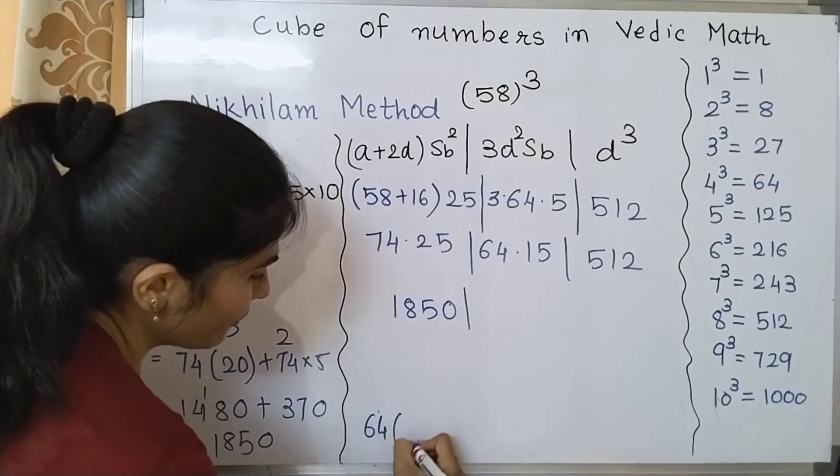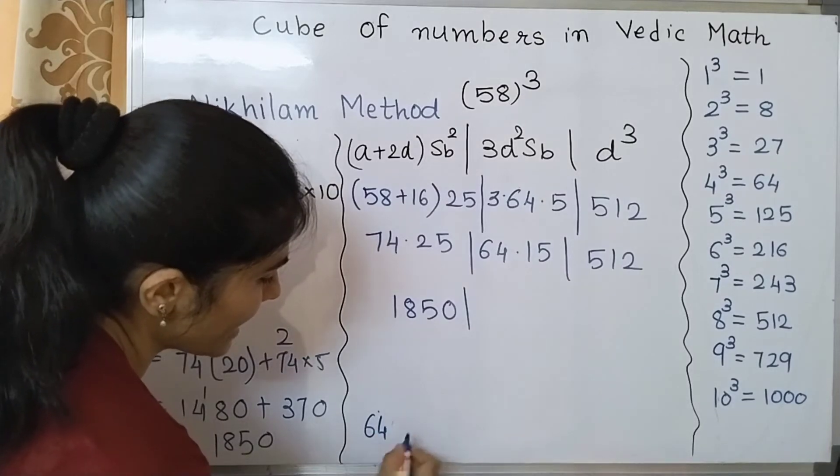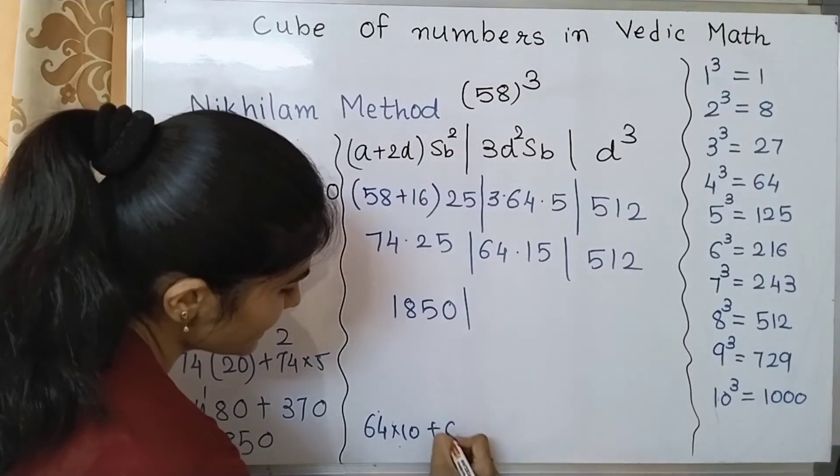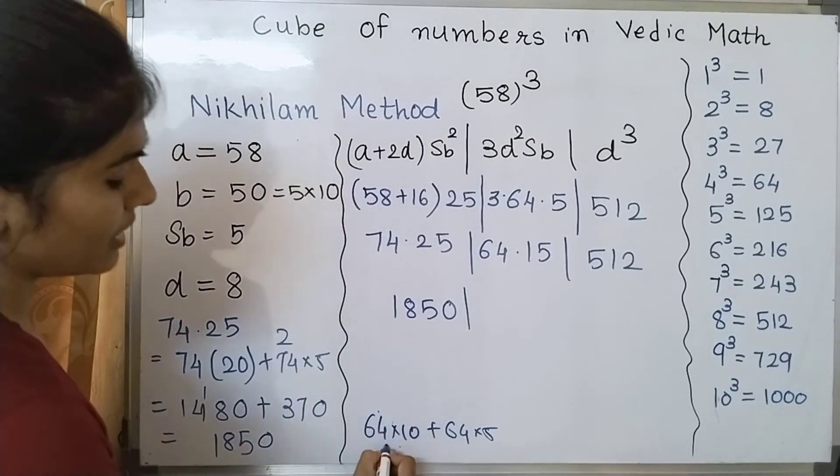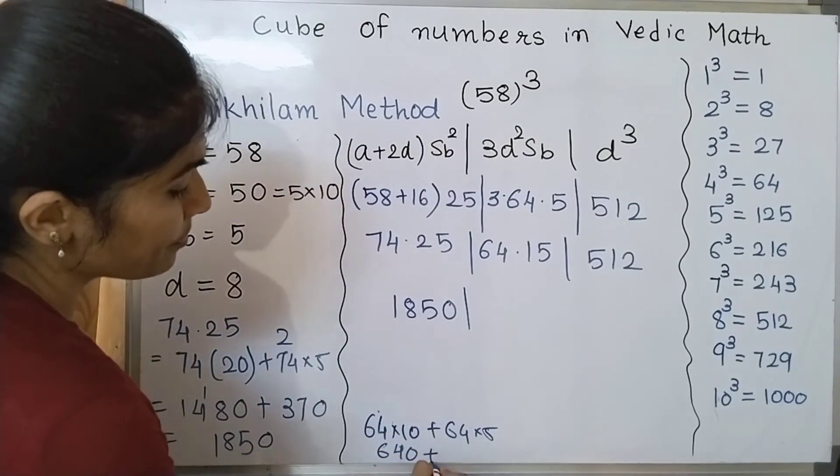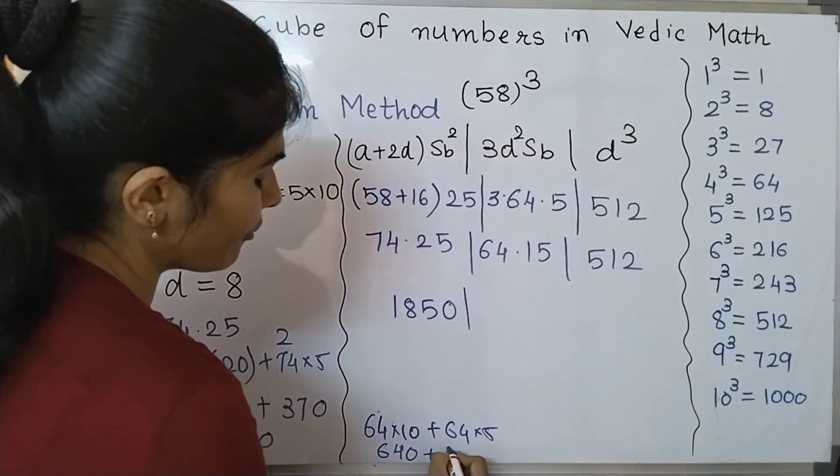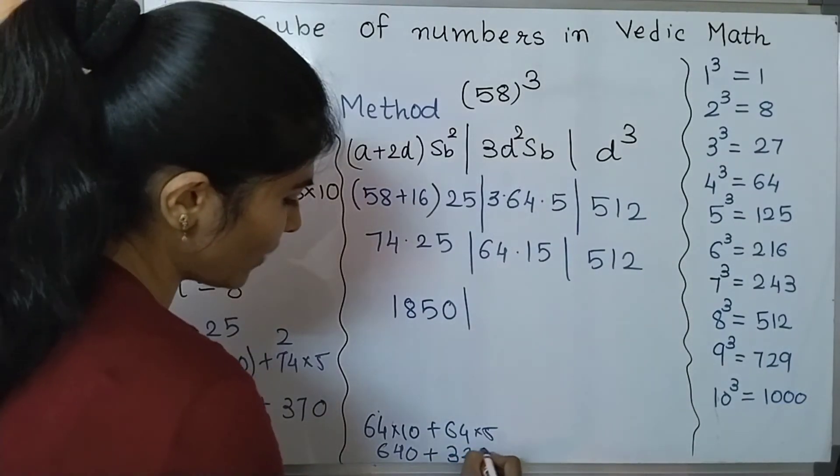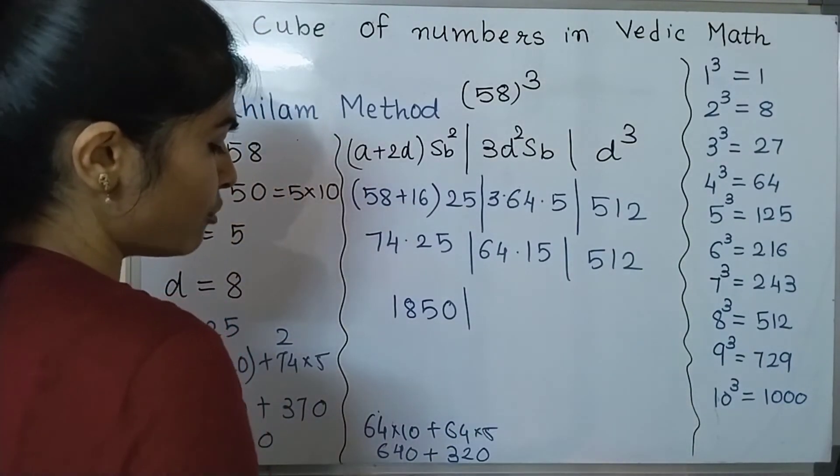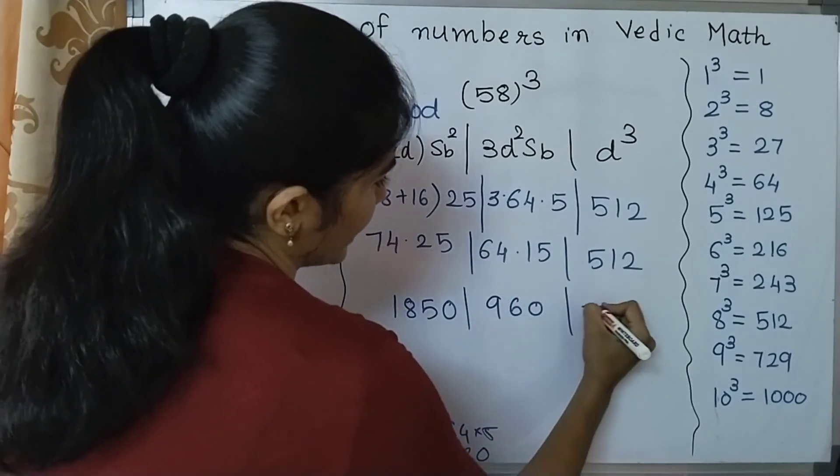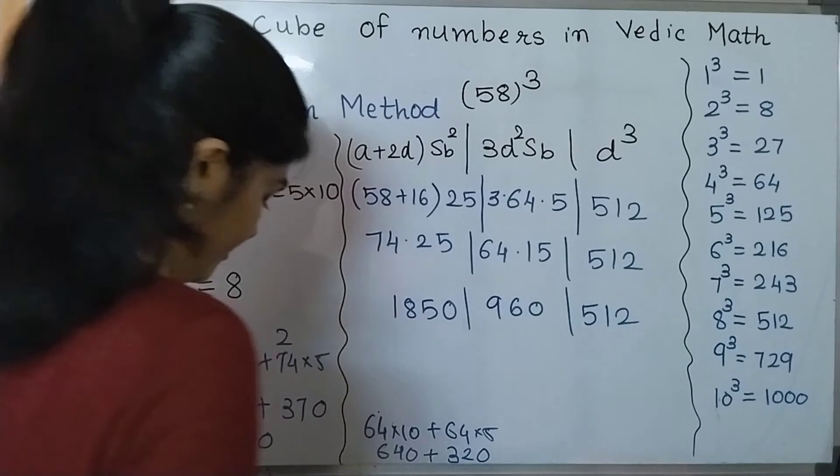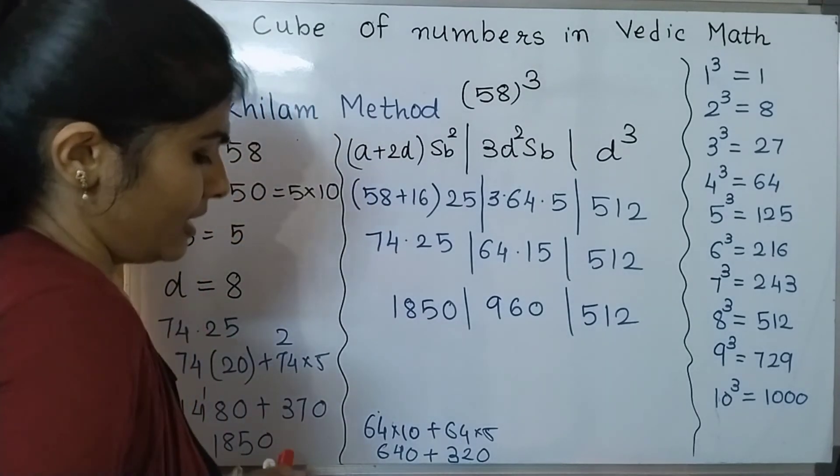Similar way we can go with this. I am going to do it over here, 64 times 15, so 64 times 10 plus 64 times 5. I am using distributive property. So this will become 640 and this will become half of it which is 320. So if we add both of them it is 960 and this is 512.